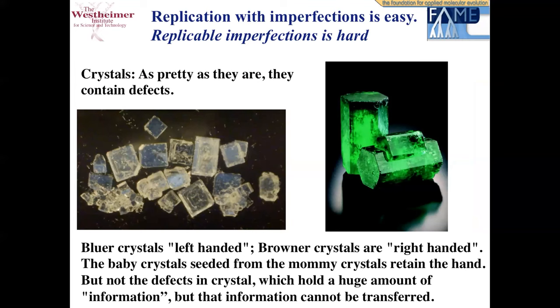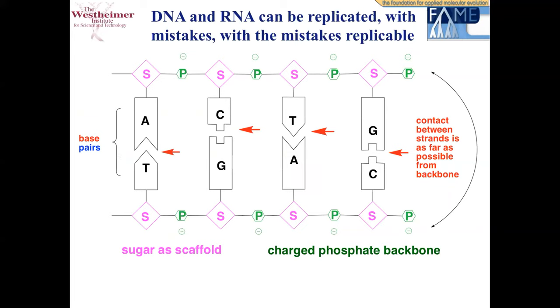DNA and RNA are molecules that can be replicated with mistakes, and those mistakes can themselves be replicated. There's the cartoon structure of DNA with the AT and CG base pairs. As you learned in high school biology, Watson and Crick pairing rules apply — big things like A and G pair with small things like T and C. There are Lego-like features that let A recognize T and C recognize G. The contact between base pairs on the two strands is as far as possible from the backbone.